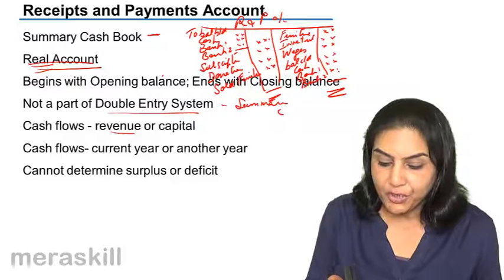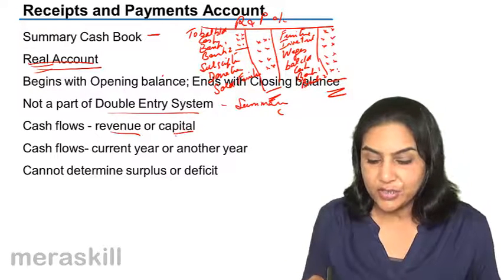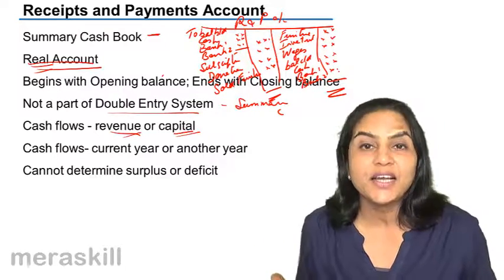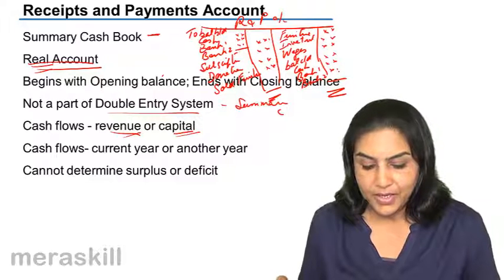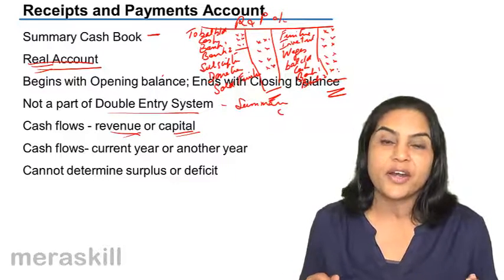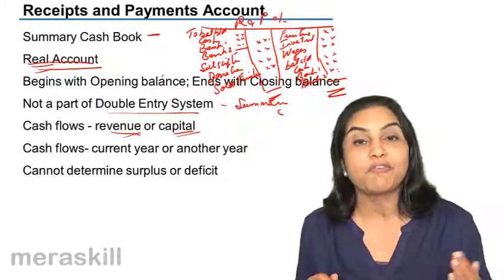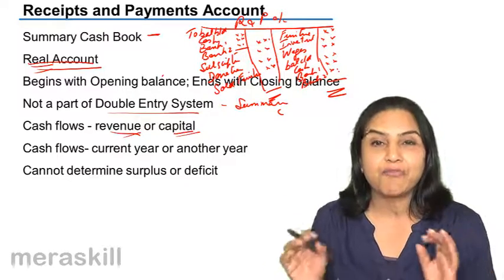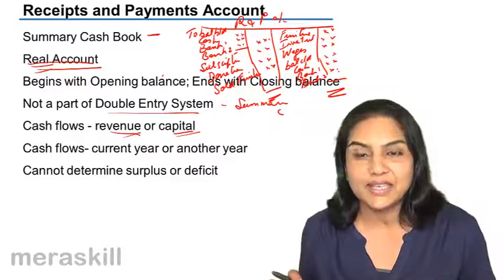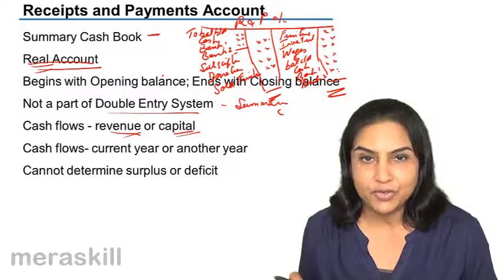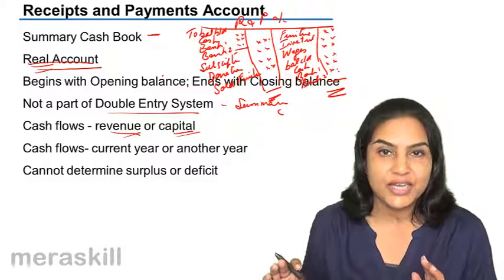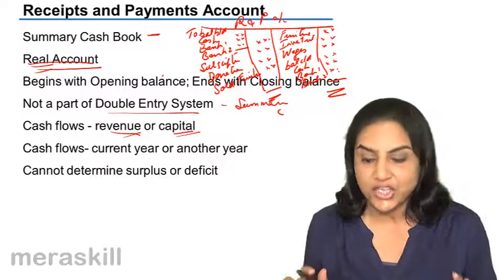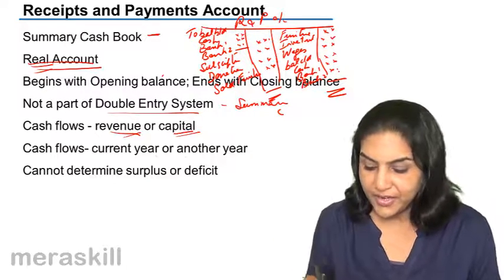Cash flows whether they are revenue or capital — that's why whether you sell furniture or you get subscription income, any cash flow finds its place in a receipts and payments account. Cash flows whether related to the current year or another year: if we receive subscription income of last year in the current year, or if we receive subscription income in advance for the next five years, everything received finds its place here. We do not consider accruals and outstanding — all we ask is what is the actual cash come in and what is the actual cash gone out.